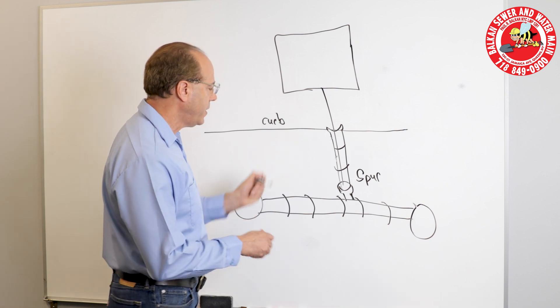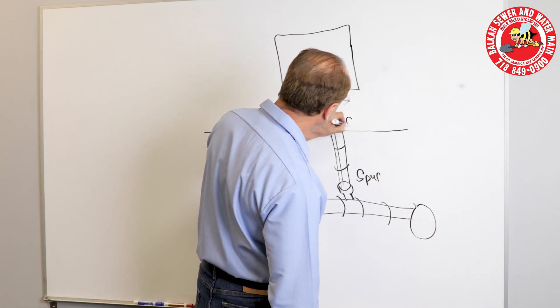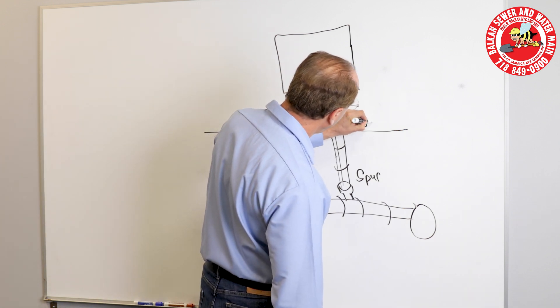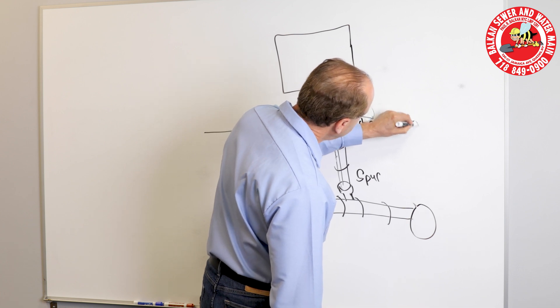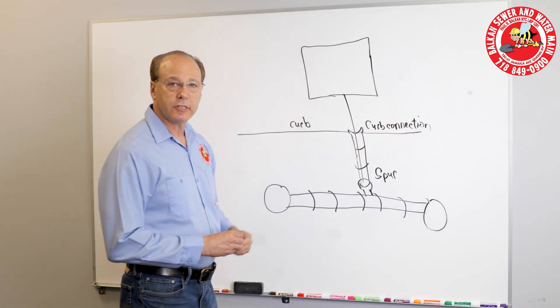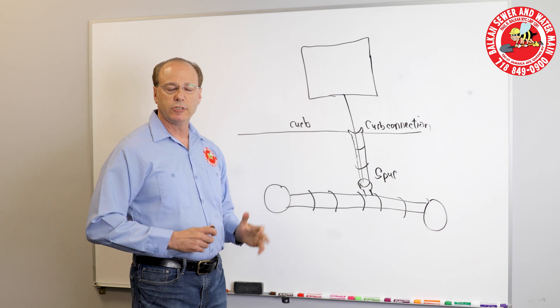Another time you may find a curb connection is if there was a previous house on the lot that was demolished,